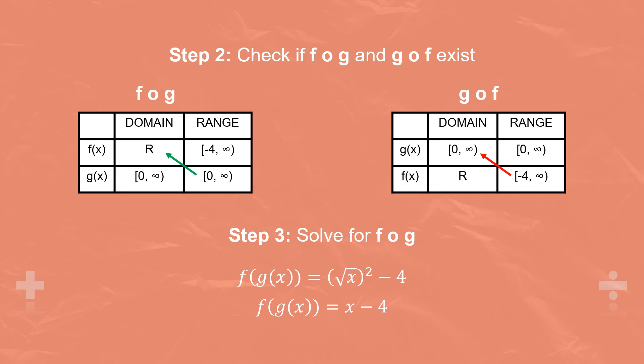Step 3 is to solve for FOG. As GOF doesn't exist, we can't solve for it — it hasn't met the requirement that the range of f of x must be contained in the domain of g of x. Solving for FOG, we replace any x value in f of x with the equation g of x. We've replaced x squared with square root of x, which simplifies down to x minus 4. So our new composite equation is f of g of x equals x minus 4.